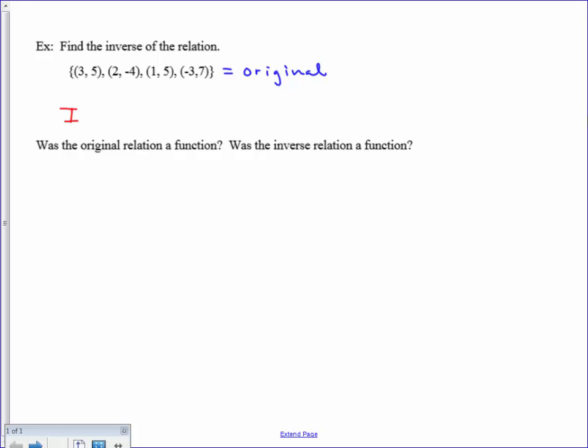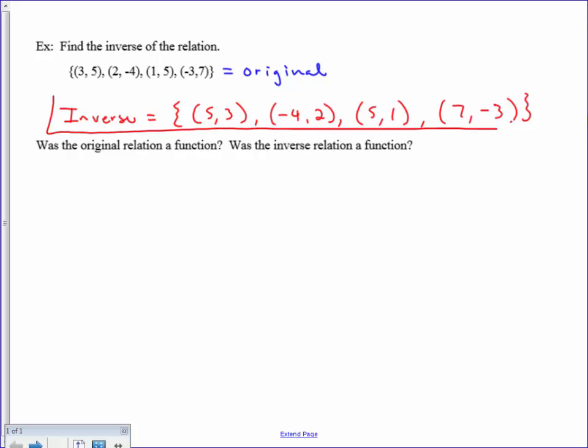So the inverse we would find by switching the original ordered pairs. So here we would have (5,3), (-4,2), (5,1), and (7,-3). Close that off with a curly brace. So there is our inverse of the original.